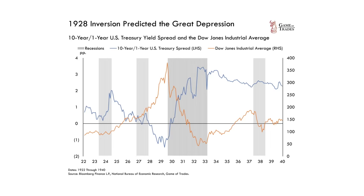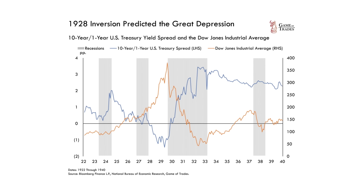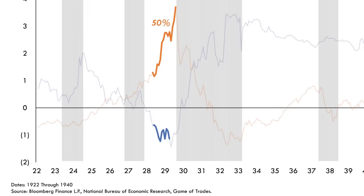With the Dow Jones plummeting by 80% and the unemployment rate in the United States reaching a staggering 24%, we actually had an almost two-year period where stocks went up by a staggering 50% despite the recessionary signal from the yield curve inversion.